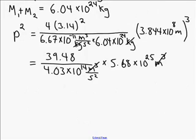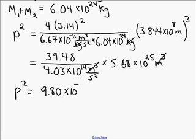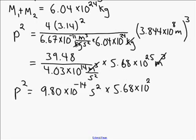All right. Of course, need more space. So p squared. Keep working on this. 39.48 divided by 4.03 times 10 to the 14. That works out to be 9.80 times 10 to the minus 14. We're dividing by 1 over second squared. So the units here are actually second squared times 5.68 times 10 to the 25. And the meters cubed canceled, so no units there.